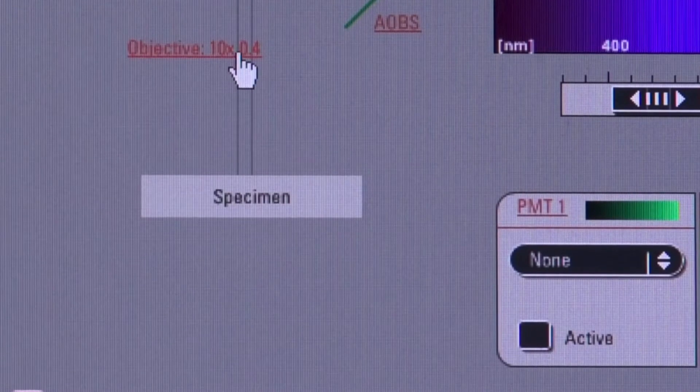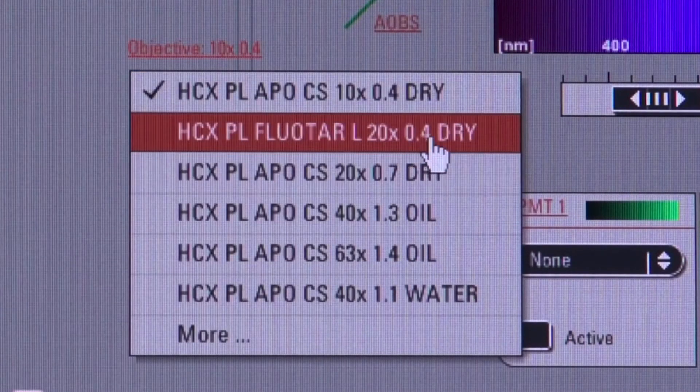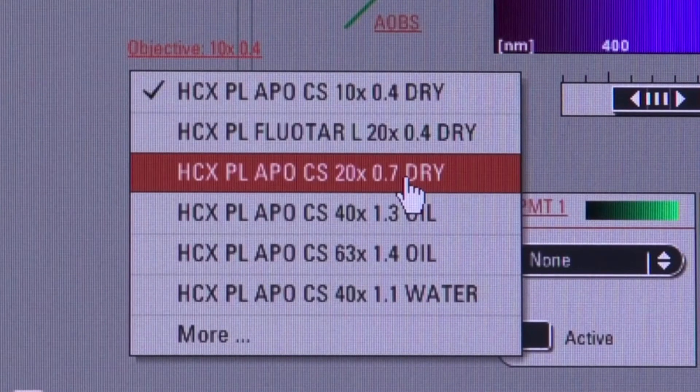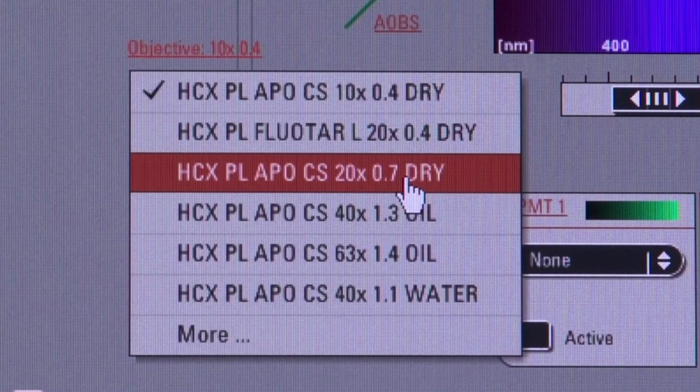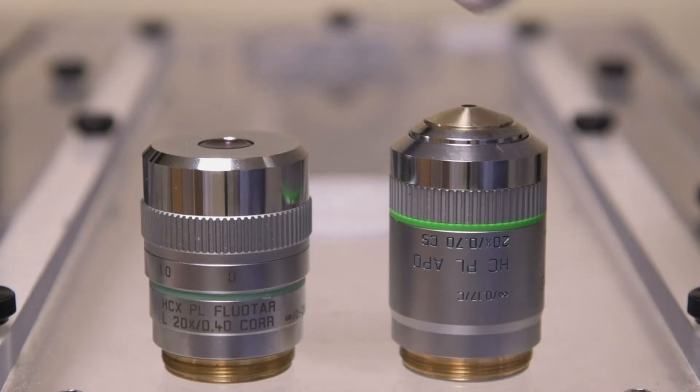Back in the software, you can see that we have two different 20X objectives listed. They are both dry lenses, but one has a very short working distance and the other has a longer one. How can you tell the difference? Take a look at the other number listed next to each objective. This other number is the numerical aperture or NA of the objective. This is a measure of the resolving power of the lens and is actually a more important number than the magnification itself. We always want to use an objective with the highest NA possible because that's going to give us the highest resolution and the highest resolving power. The higher the NA, the more detail we'll be able to see.